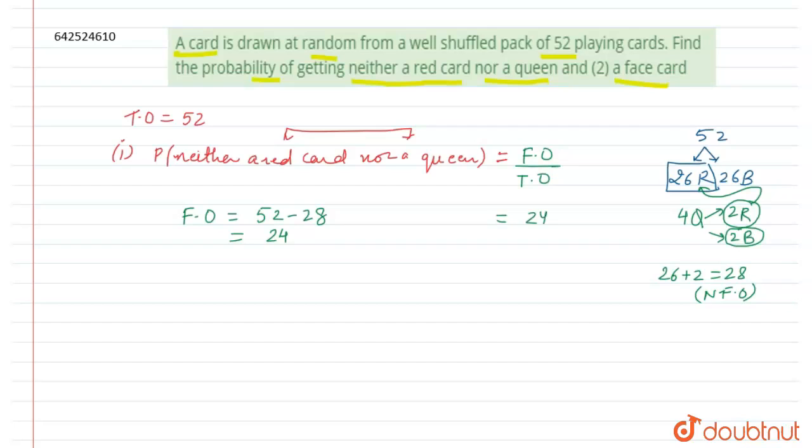Now we can cancel these both out by 4. So 4 times 6 is 24, and 4 times 13 is 52. So first answer will be 6 by 13. Clear.